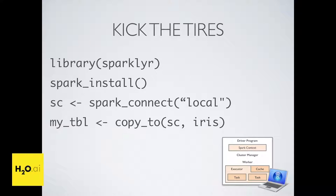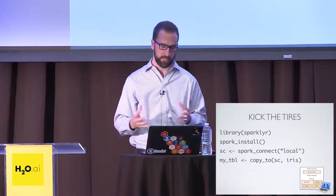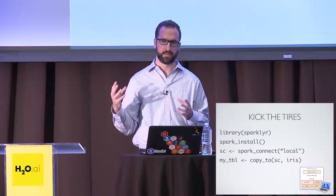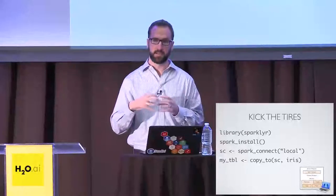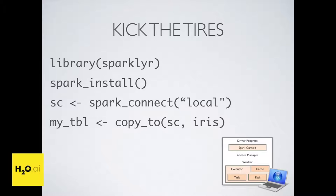This is all it takes. You install the package, then run the spark_install command. That will go get everything you need — all the Spark libraries, the Hadoop libraries — and provision it all for you. Then you connect, and here we're running a local cluster. Of course you can connect to your real Spark cluster in production, but if you just want to kick the tires, run it locally. This sets up a real, full-fledged Spark environment on your local machine — you've got your executor, master, and slave. This is the real Spark environment; you're not lacking anything.